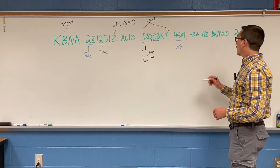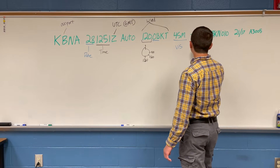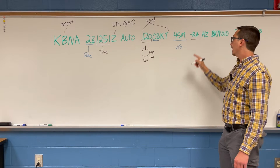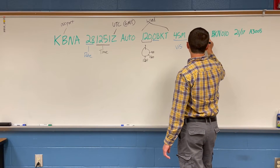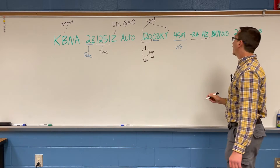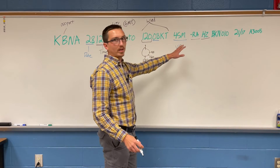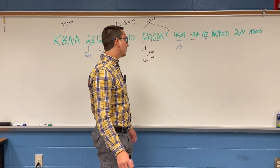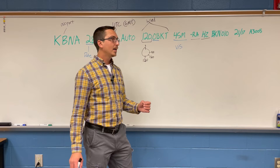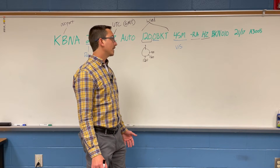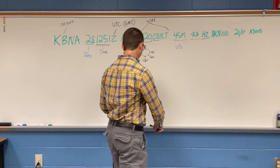Next are the weather conditions. A minus sign before 'RA' means light rain. If there's no sign, it's just rain. A plus sign means heavy rain. 'HZ' means haze — most of these abbreviations are pretty straightforward. The one that's a little weird and worth memorizing is 'BR,' which means mist. 'TS' means thunderstorm. You'll want to know those key ones, though you don't need to memorize every single abbreviation.